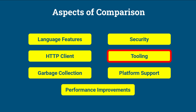Tooling. Java 8 included the JJS tool for running JavaScript code on the JVM using Nashorn. Java 11 includes improvements to the JShell tool for interactive Java programming, as well as updates to other development tools.